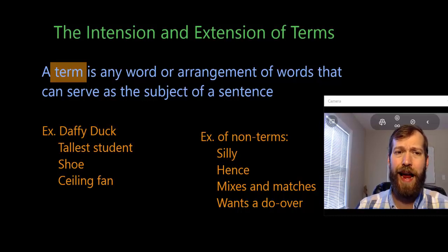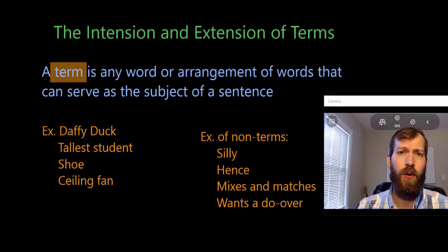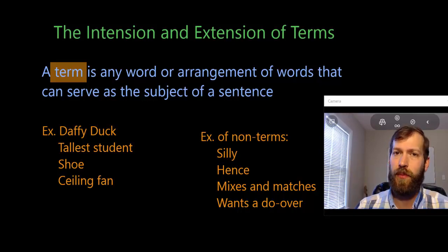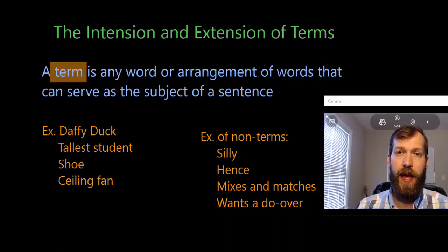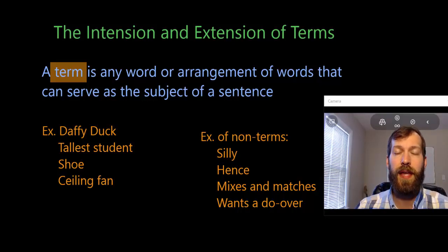What we're going to turn to now is terms. There are two kinds of meanings associated with terms: intentional meaning and extensional meaning. First, let's consider what a term is. A term is any word or arrangement of words that can serve as the grammatical subject of a sentence. If it can serve as the grammatical subject in a grammatically correct fashion, then it's a term.